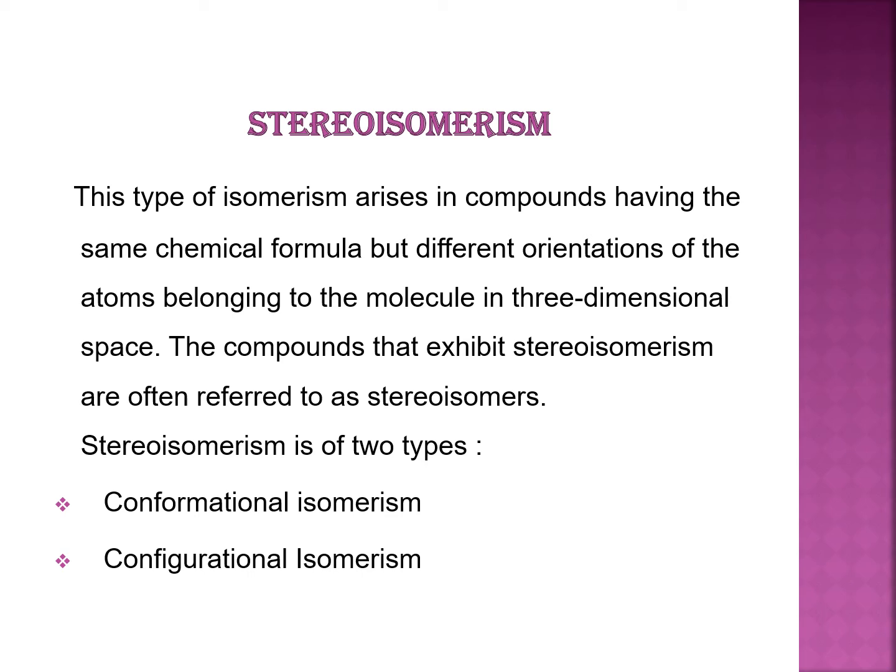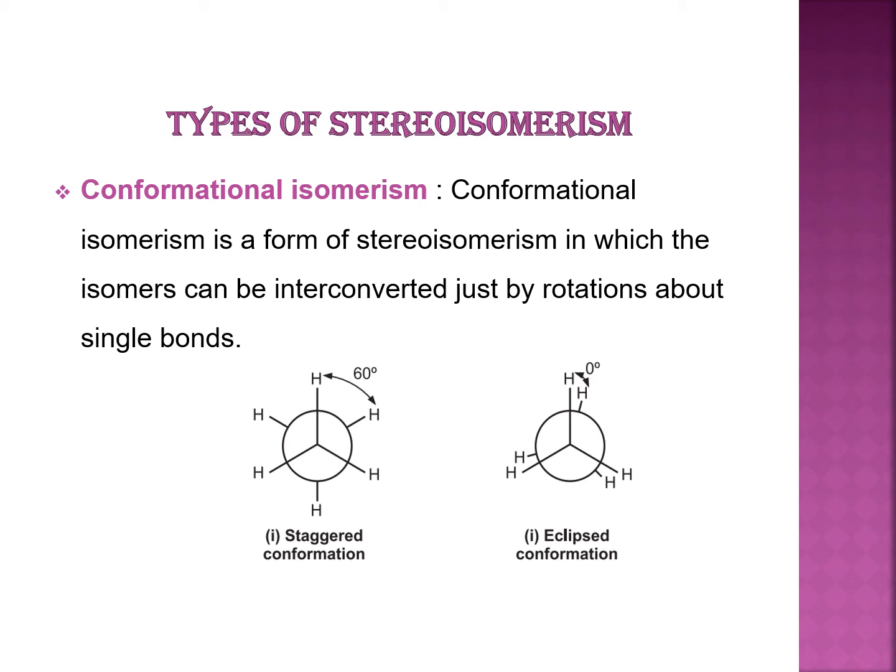Stereoisomerism is of two types: conformational isomerism and configurational isomerism. Conformational isomerism is a form of stereoisomerism in which isomers can be interconverted just by rotation about a single bond. For example, the ethane molecule exists in a staggered conformation and an eclipsed conformation, and both forms are interconvertible into each other.